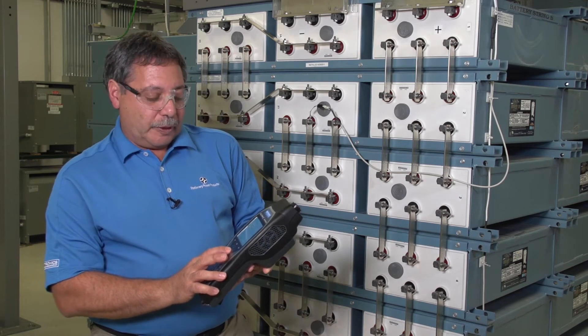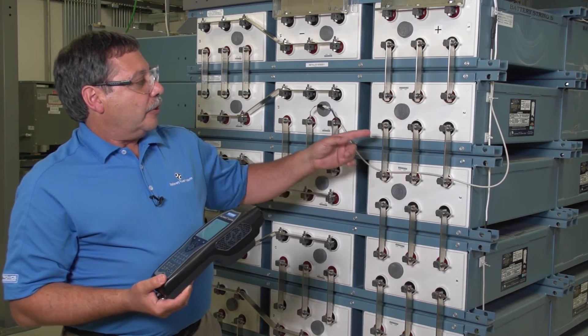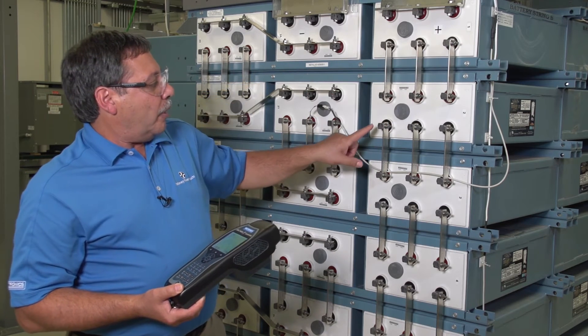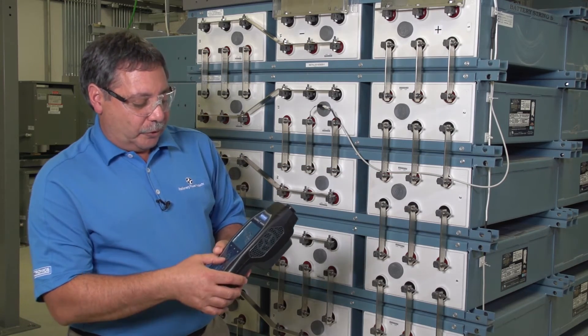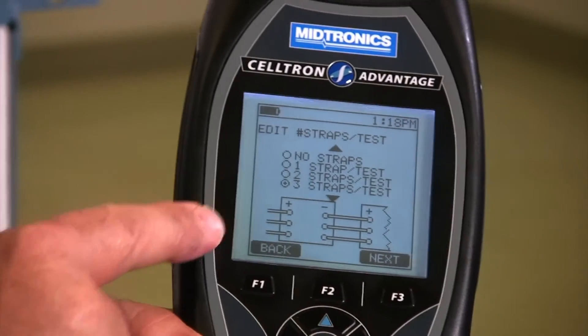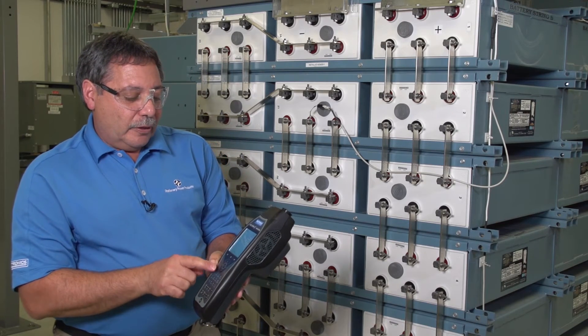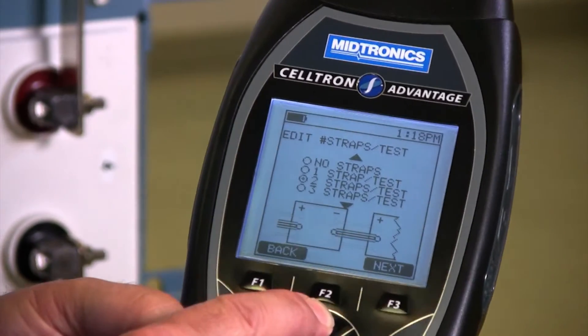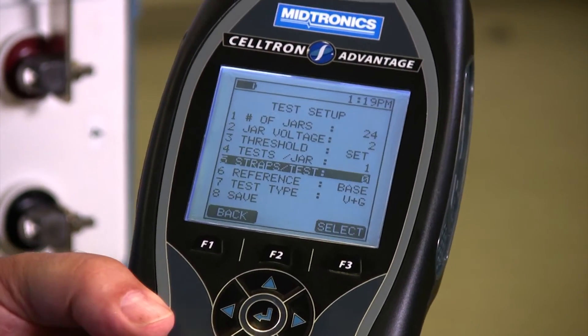Next is what we call the strap test, which refers to our inner cell connectors. So if I wanted to do one test across this cell for the battery test, but wanted to test each inner cell connection here, I could set this up to do three strap tests and it'll give you a picture of just that setup that matches our configuration here in our battery stack. If you had to do those strap tests, you can set it up. If your policy is no strap test, you just leave it at none.